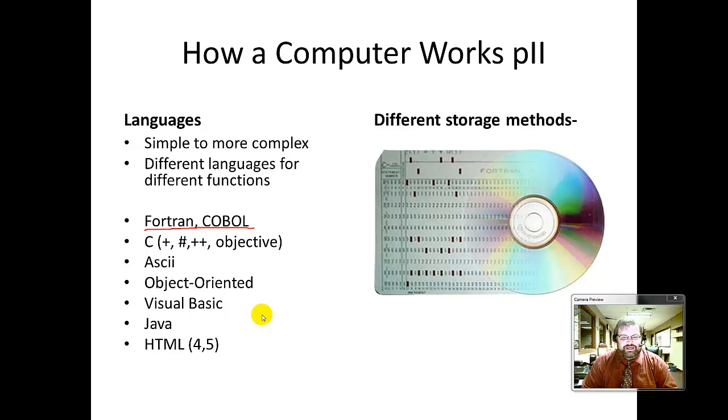We've created different storage mechanisms. Fortran originally used these punch cards that you would feed into the computer. Then we migrated to floppy disks and CD-ROMs, and now we have cloud storage, which takes the data directly from one computer to another computer in a series of networks and electron transfer.